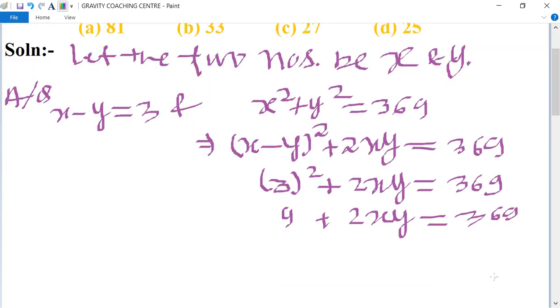Therefore, 2xy equals 369 minus 9, which equals 360.